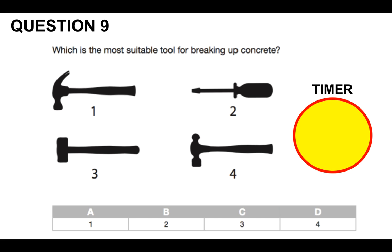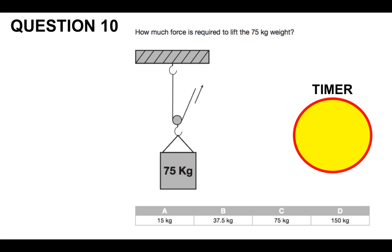Question number nine: Which is the most suitable tool for breaking up concrete? One, two, three, or four. The most suitable tool for breaking up concrete. And now question ten: How much force is required to lift the 75 kilogram weight? Is it 15 kilograms, 37.5, 75, or 150? How much force is required to lift the weight?